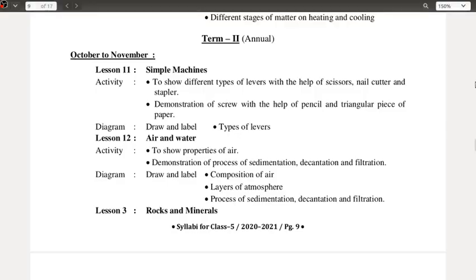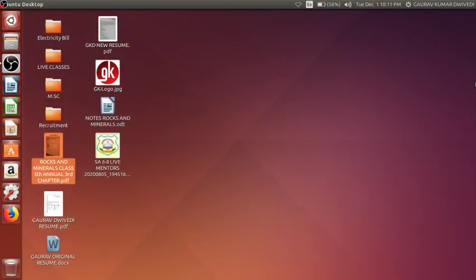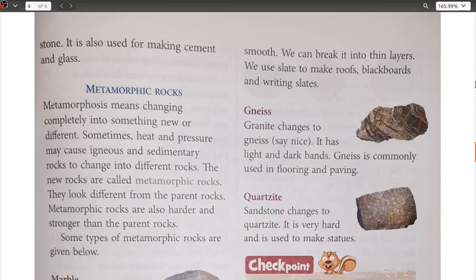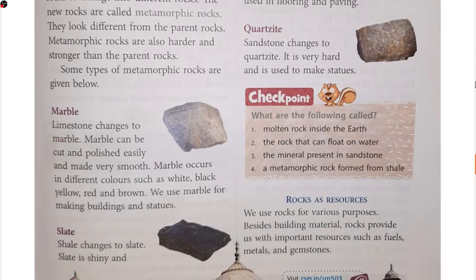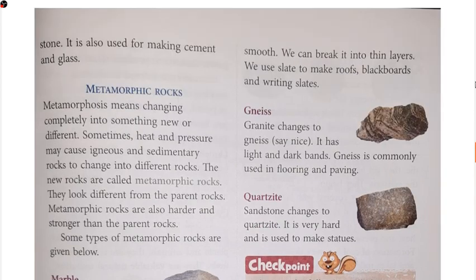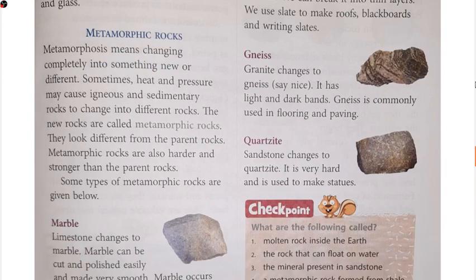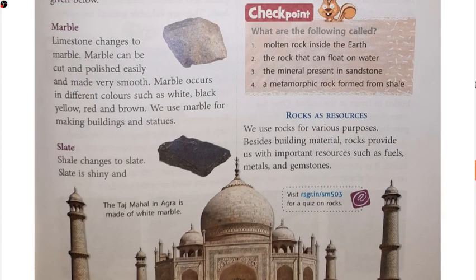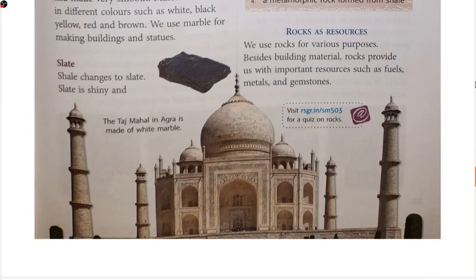In the last class we discussed metamorphic rocks and their different types: marble, slate, schist, and quartzite. Today we are going to start with the next topic, that is rocks as a resource. We have a checkpoint: what are the following called? We have already discussed this, starting with rocks as a resource.